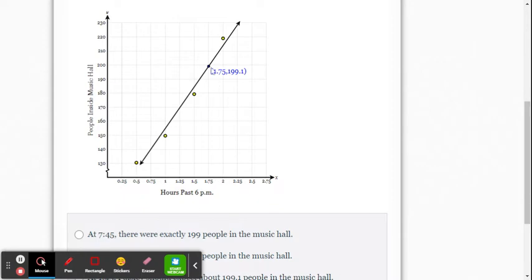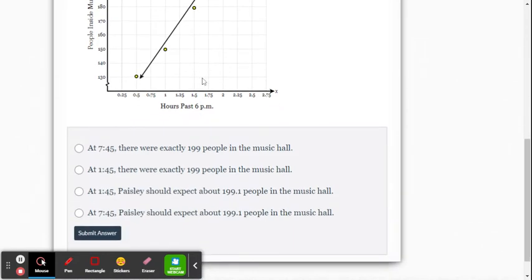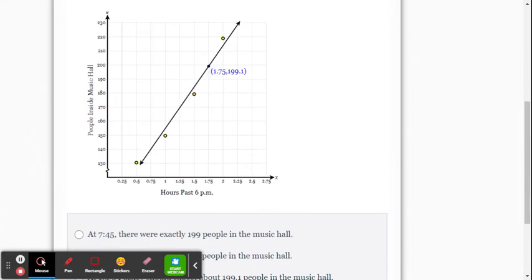So they wanted this point, 1.75, 199.1 is actually on the line, but that wasn't the one used. So I don't believe it was the one actually used, because it is a point on there. So I'm thinking they're making a prediction here.